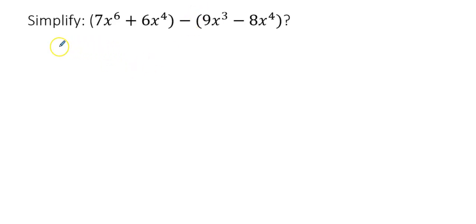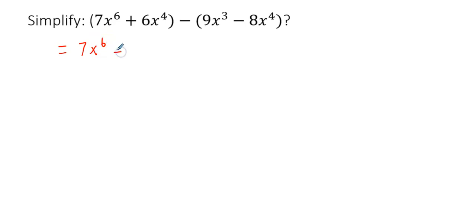My first step is to remove the parentheses of the first expression — write down 7x to the power of 6 plus 6x to the power of 4. We did not do anything else except taking out those parentheses.